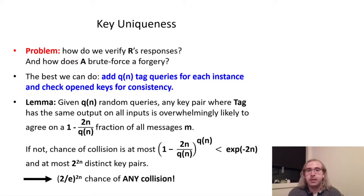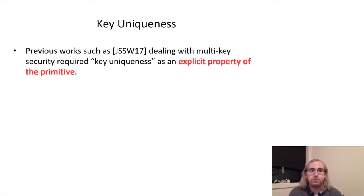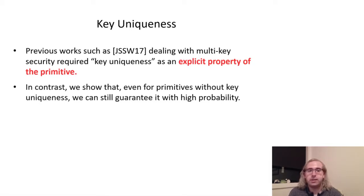Specifically, we do so through this lemma: if we have some pair of keys that produce the same output on our Q tag queries, then it's overwhelmingly likely that they will agree on most messages. What this means is that if, during rewinding, the key recovered by B is consistent with the queries but somehow different from the one A brute forced using the results of the queries, then it's likely that A and B will still end up with the same actual forgery. The proof is fairly straightforward: for any key pair that doesn't agree on most inputs, we can show that the probability of that pair agreeing on our Q random tag queries is exponentially small, even when we factor in the fact that there may be up to 2 to the 2N possible key pairs. The fact that we can actually deal with this issue is interesting in and of itself, since the one prior work that ran into this issue — specifically in the context of a meta-reduction for authenticated encryption — required key uniqueness as an explicit property of the primitive. In contrast, we show that we can use additional queries to guarantee that keys will still agree on the forgery target with high probability, even without a strict requirement for it.